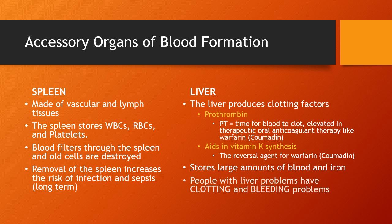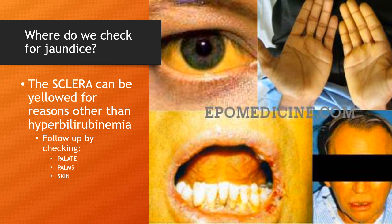The liver stores a large amount of blood and iron for use in red blood cell formation. People who have chronic liver problems such as hepatitis, cirrhosis, and liver cancer will have problems with clotting and bleeding, and therefore they are at high risk for increased problems with injury or with injections. If the liver is not functioning properly, or if there is an enhanced destruction of red blood cells and bilirubin is being released into the bloodstream, we have what's referred to as jaundice or icterus, where the skin starts to turn yellow.